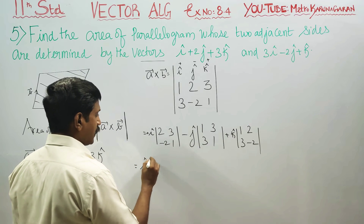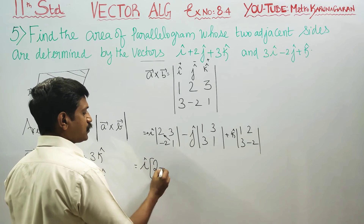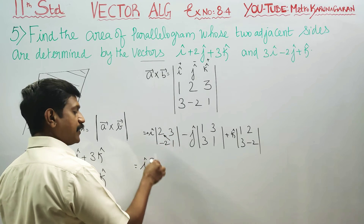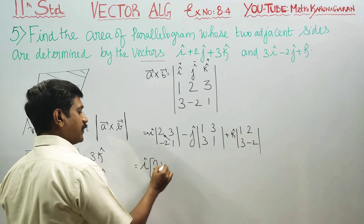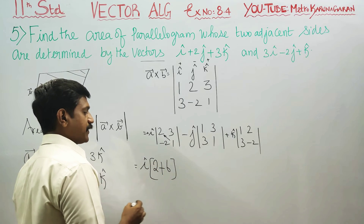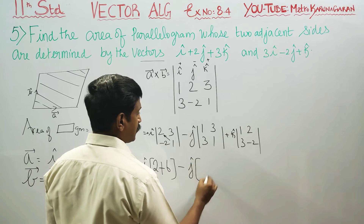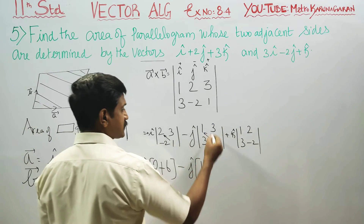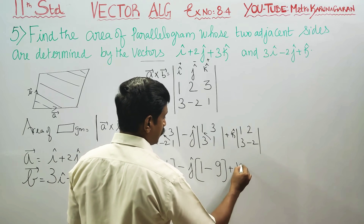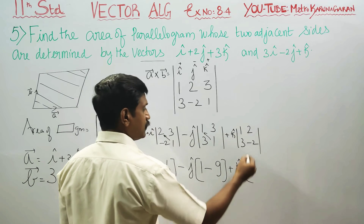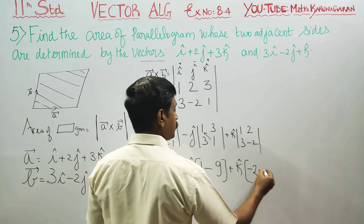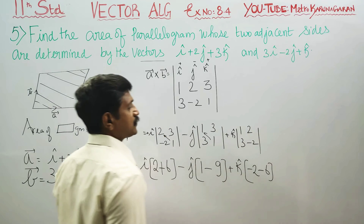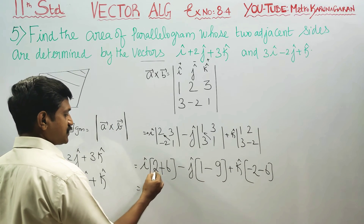Now, i vector: right-hand side 1 times 2 is 2, minus left-hand side minus 6, giving minus 6. Then minus j vector: 1 times 1 is 1, minus 3 times 3 is 9. Plus k vector: minus 2 times 3 is minus 6, minus 2 times 3 is 6. Then 6 plus 2 is 8.